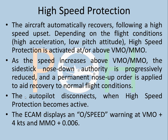High speed protection: the aircraft automatically recovers from a high speed upset. Depending on the flight condition — high acceleration, low pitch attitude — high speed protection is activated at or above VMO and MMO (maximum operating speed). If your speed is at or above VMO or MMO (maximum Mach operating number), the side stick nose-down authority is progressively reduced and a permanent nose-up order is applied to aid recovery. The autopilot disconnects when this protection is active, and the overspeed warning activates on the ECAM as a permanent warning until speed is reduced. It activates at VMO plus 4 knots and MMO plus 0.006.